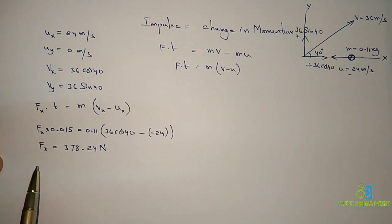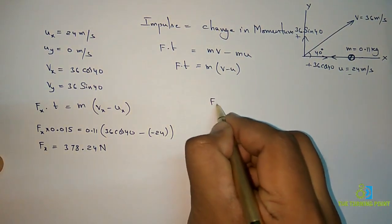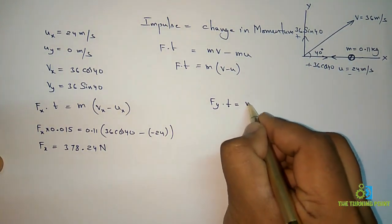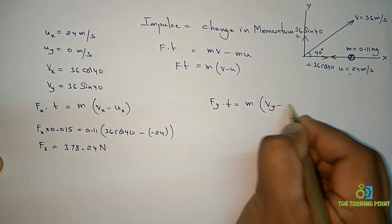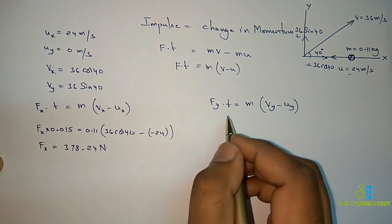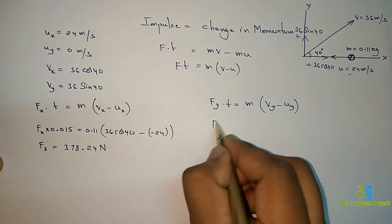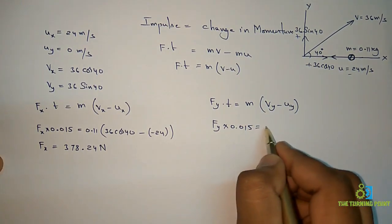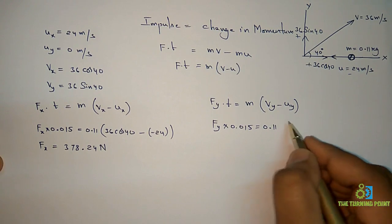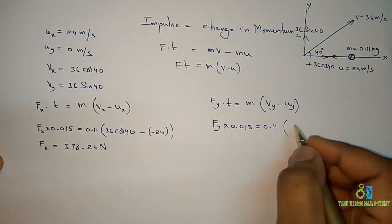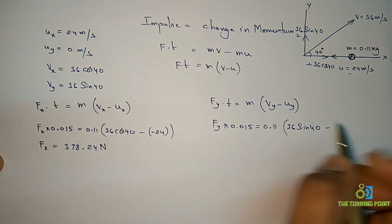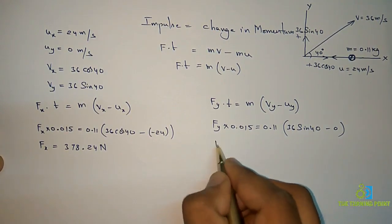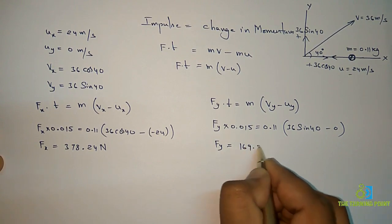Now let us find the impulsive force along the y-direction using the impulse-momentum principle. Fy × t = m × (vy_final − vy_initial). Substituting: Fy × 0.015 = 0.11 × (36 sin 40° − 0), since the initial velocity along y-direction is zero. Simplifying, you get Fy = 169.7 newtons.